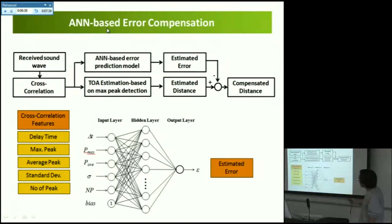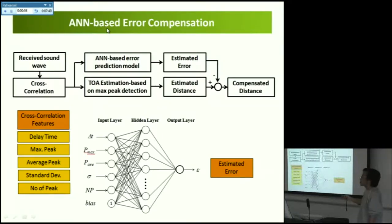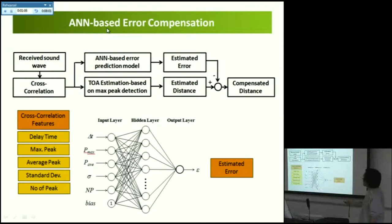The network is a simple three-layer neural network with five inputs. The features used as inputs are extracted from the cross-correlation: the estimated delay time, maximum peak, average peak, standard deviation, and number of peaks. Using this network, we can estimate the error.